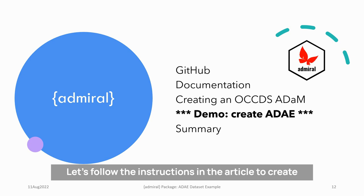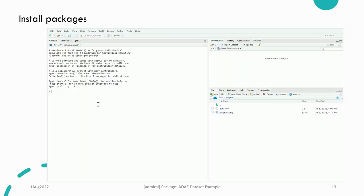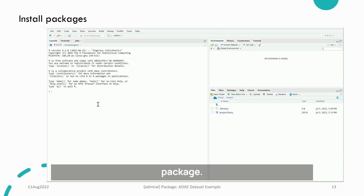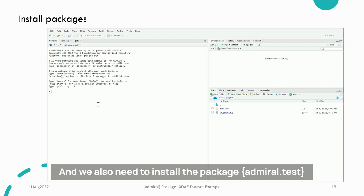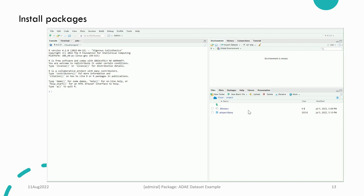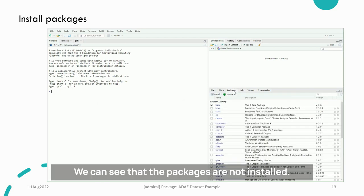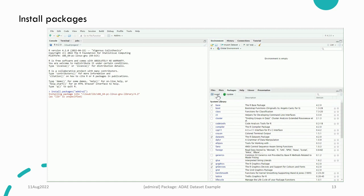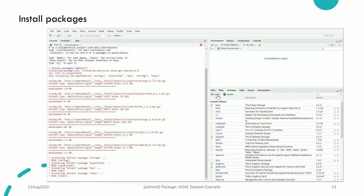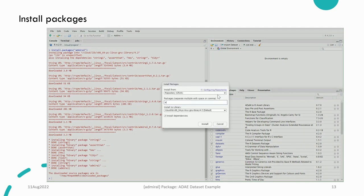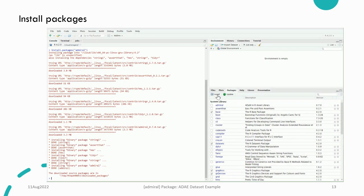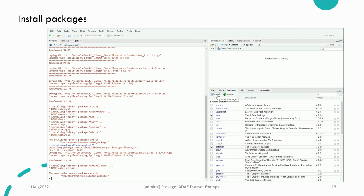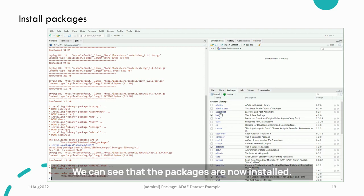Let's follow the instructions in the article to create an example ADAE dataset. Before we begin, we will need to install the Admiral package. We also need to install the package admiral.test, which contains the test data that we will be using. We can see that the packages are not installed. We will install them from CRAN. This will take a few seconds. We can see that the packages are now installed.